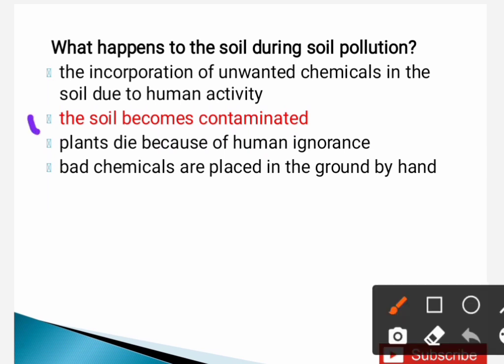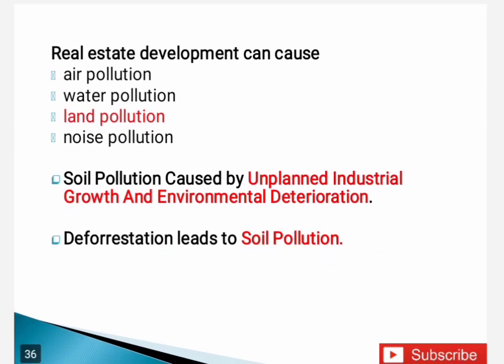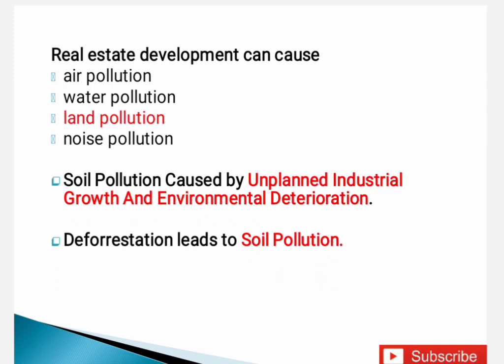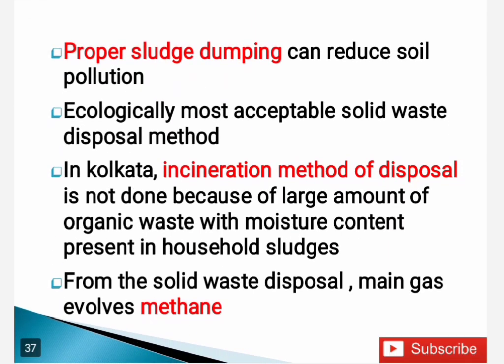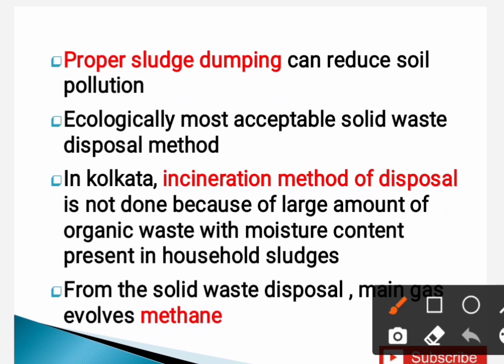Next question: what happens to the soil during soil pollution? The correct answer is the soil becomes contaminated. Next: real estate development can cause land pollution. Now for one-liners: soil pollution is caused by unplanned industrial growth and environmental deterioration. Deforestation leads to soil pollution. Proper sludge dumping can reduce soil pollution.